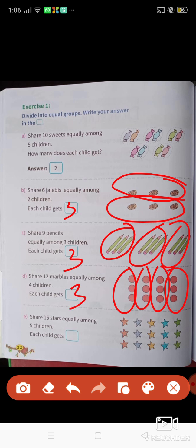Last one is share 15 stars equally among 5 children. So in 5 children we have to distribute 15 stars. So 1 will get how much? 1, 2, 3. So 5 3's are 15. That's why here also 3.